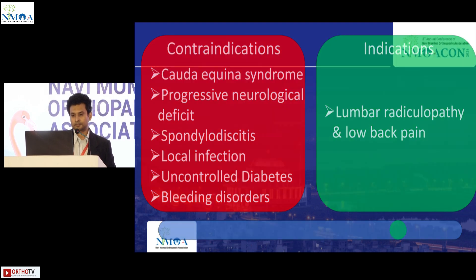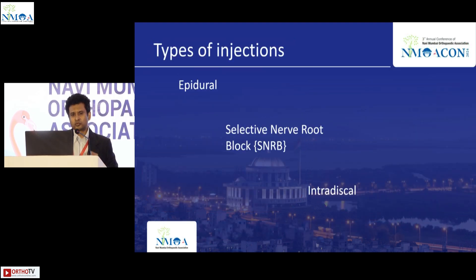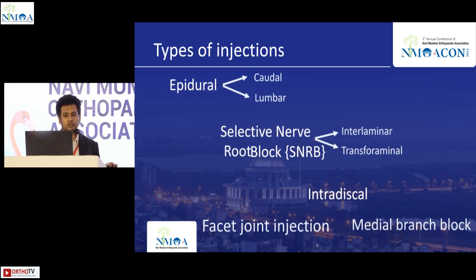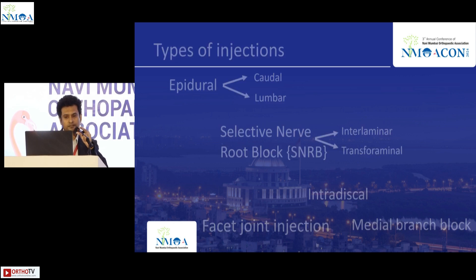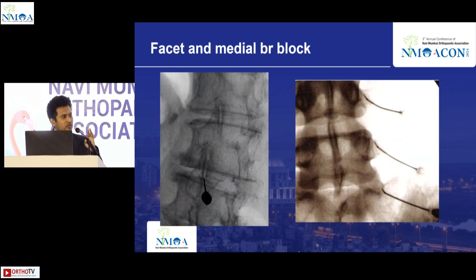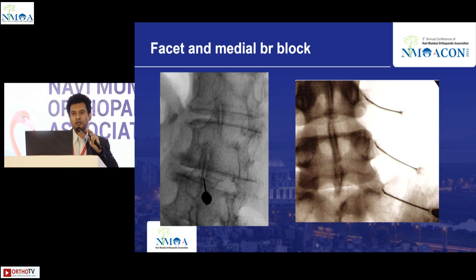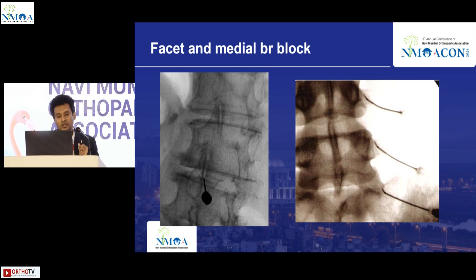There are different types of injections: epidural, selective nerve root blocks, intradiscal, facetal, and medial branch blocks. If the patient has paraspinal pain that increases on extension and rotation, this may indicate facet joint pathology, and we would address it with a facetal block or medial branch block.